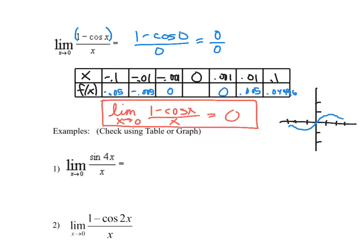Compare your table with mine. From the left and the right, the values are approaching 0. Don't be thrown off by scientific notation like 5 times 10 to the negative 4th — that's a number really close to 0. So the limit as x approaches 0 of 1 minus cosine of x over x is equal to 0. Put a big box around this. We'll put these first two formulas on our class formula sheet because you need to have them memorized. On the graph, the curve crosses through the origin, confirming a limit of 0.